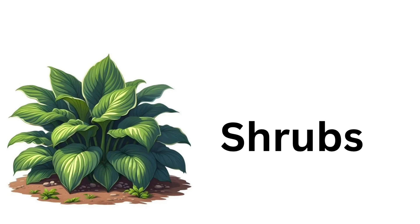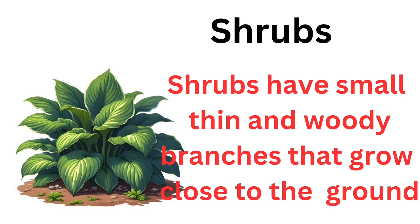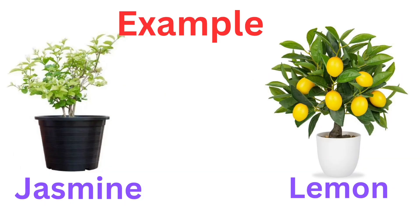Shrubs. Shrubs are medium sized plants and are smaller than trees. Shrubs have small, thin and woody branches that grow close to the ground. Examples of shrubs are jasmine and lemon.